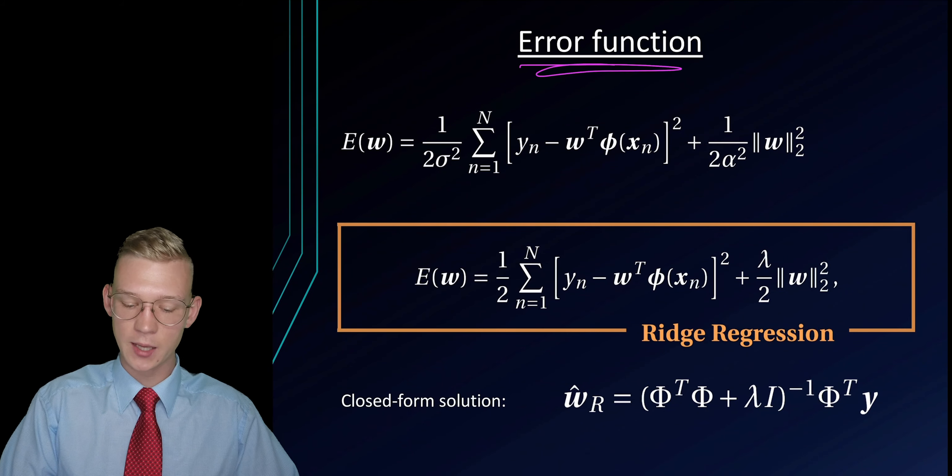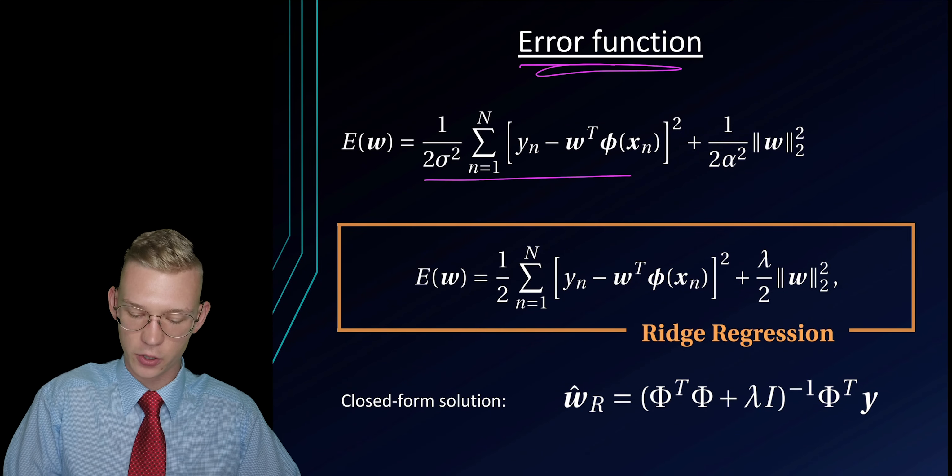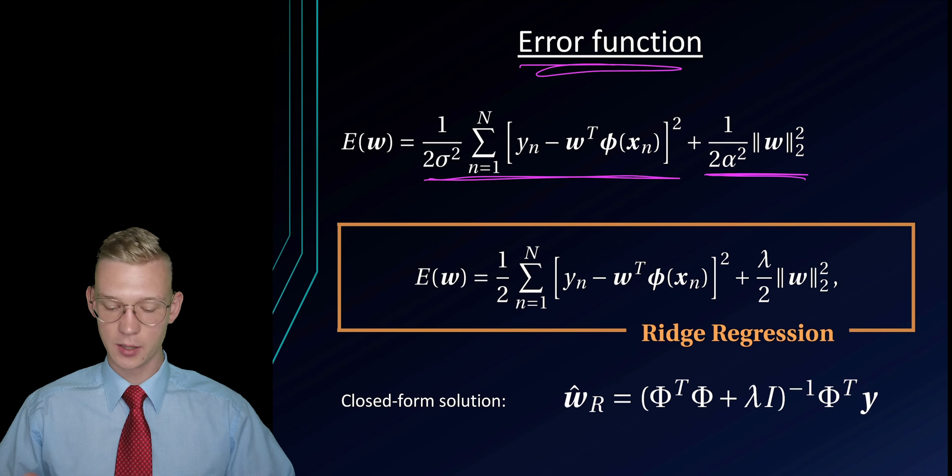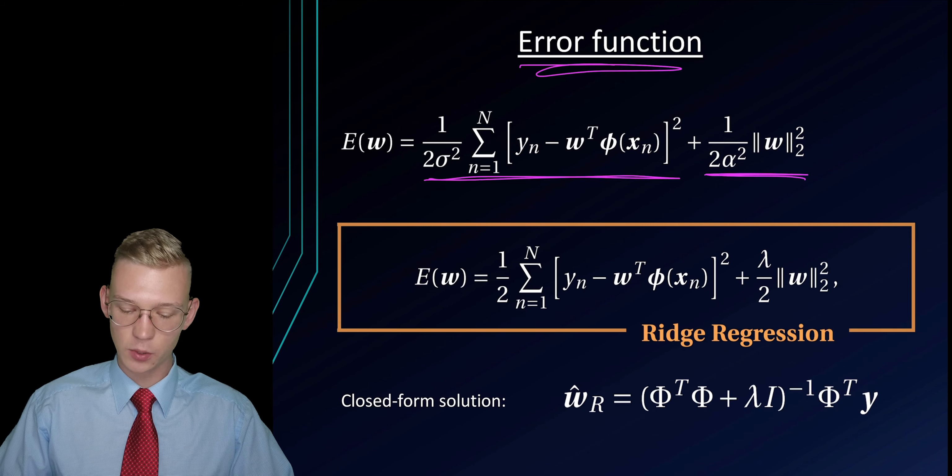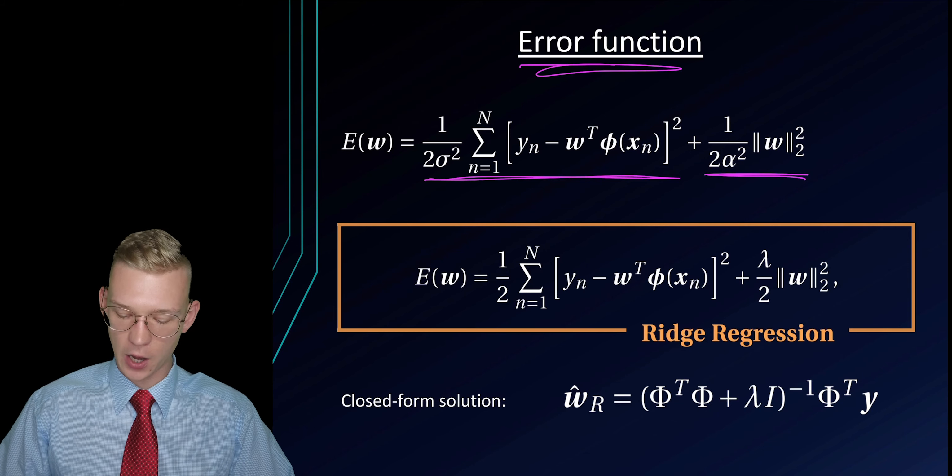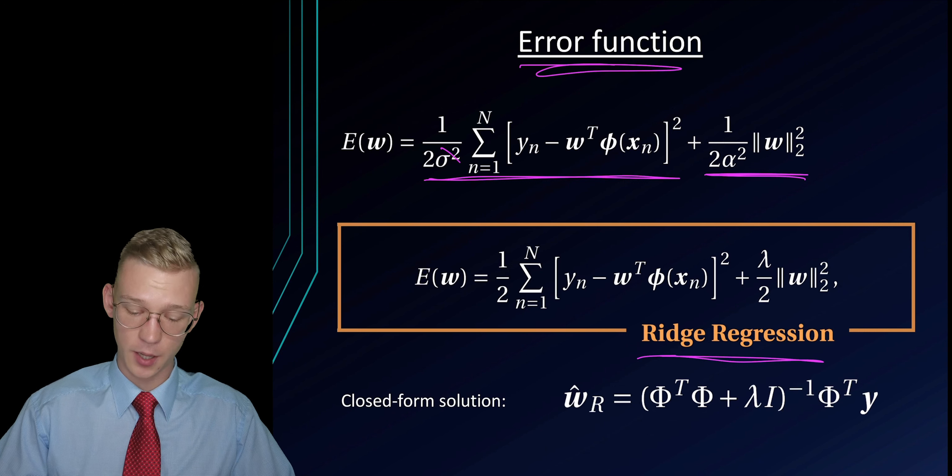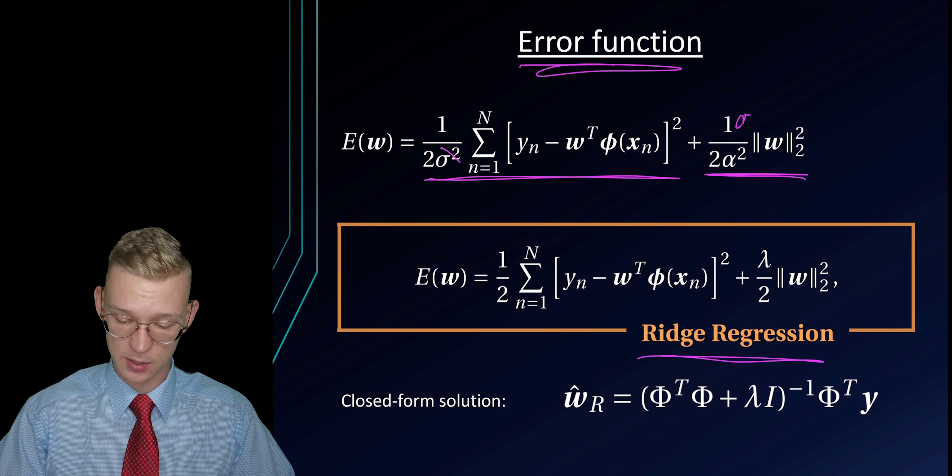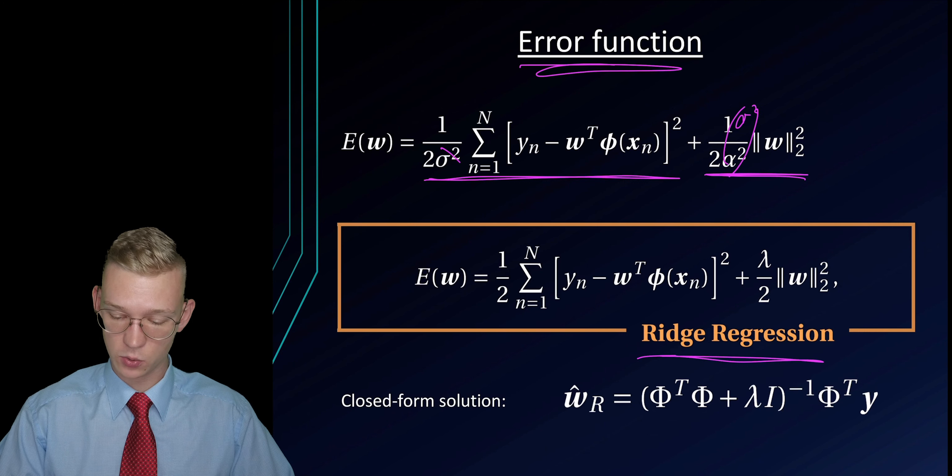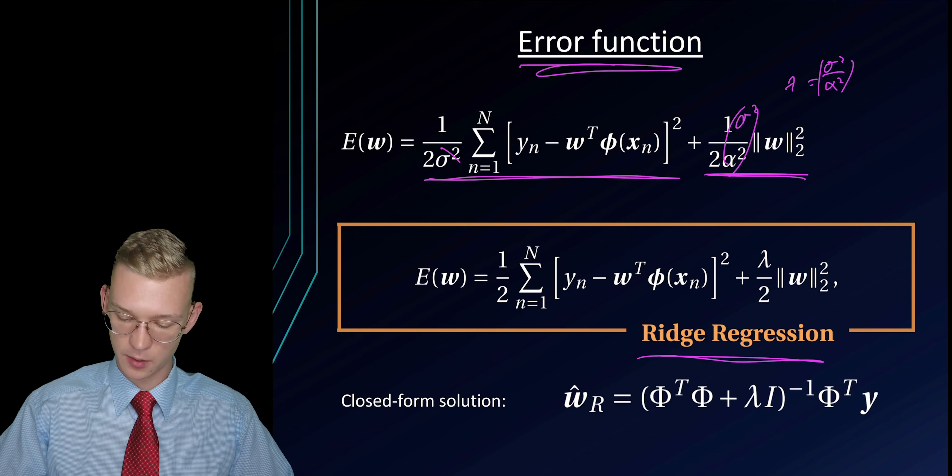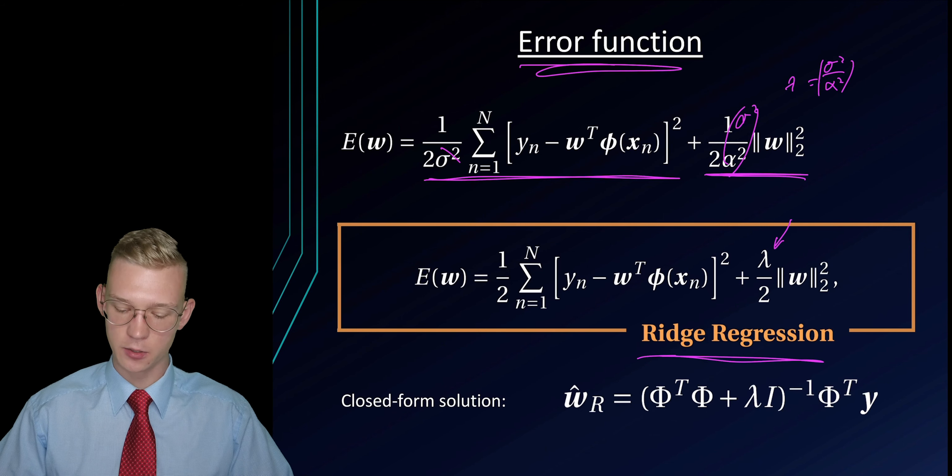That's how we get to the error function. The error function are just these two terms combined and we try to minimize those two terms. This will give us the error function of our ridge regression. We can multiply by sigma squared and then use lambda as equal to sigma divided by alpha squared. We see that we will get this lambda here.